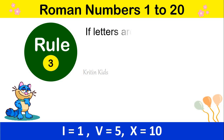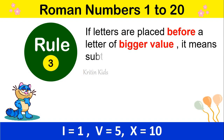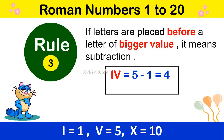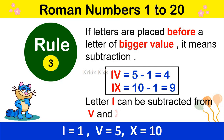Rule No. 3: If letters are placed before a letter of a bigger value, it means subtraction. For example, I and V — I is 1, V is 5, so 1 is less than 5, so it is subtraction. We subtract the smaller number from the bigger number: 5 minus 1 gives us 4. Another example: I, X — I means 1, X means 10. I has come before X, so we subtract I from X: 10 minus 1 equals 9. Note: letter I can be subtracted from V and X only.